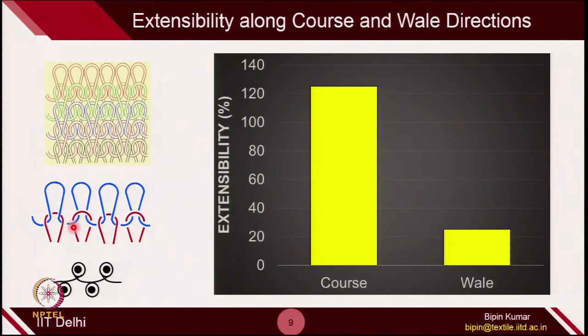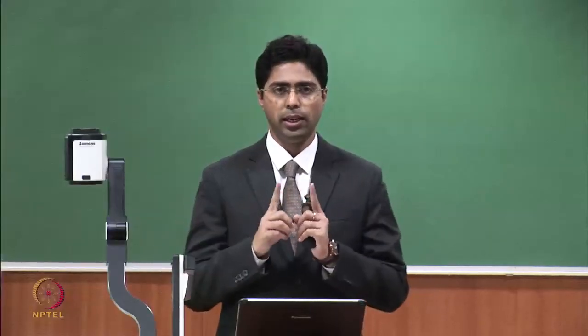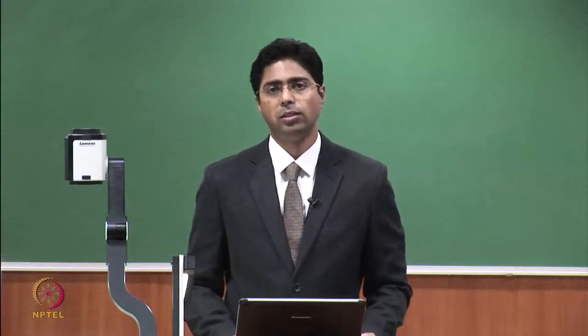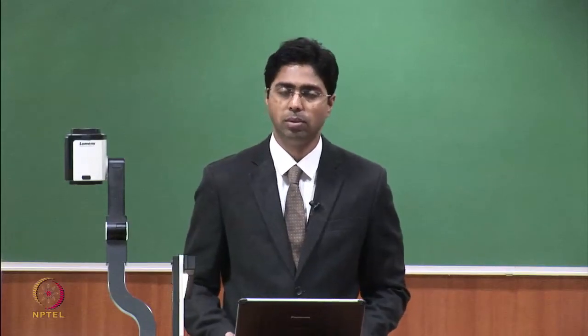When you stretch in the course direction, the loops open up and the yarn tries to achieve a straight form, giving very high extensibility. But if you try to pull the fabric in the wale direction — along a column — there is very little chance of extensibility. After some time the fabric will lock and the loops will not be able to open up the yarn. That's why the extensibility in the wale direction is very poor. I have two small fabric samples — one cut in course direction, one in wale direction — to show why the behavior is different.